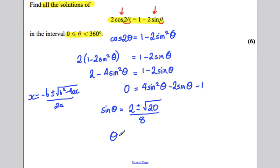So there's another one. So on the one hand, theta would be the inverse sine of 2 plus the square root of 20 over 8. And on the other hand, theta would be equal to the inverse sine of 2 subtract the square root of 20 over 8.